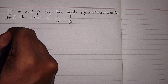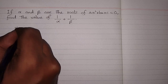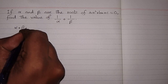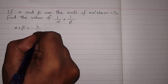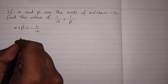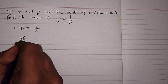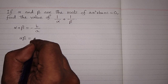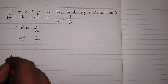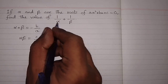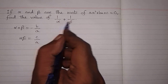If alpha and beta are the roots of the equation, the sum of the roots alpha plus beta is equal to minus b upon a, and the product of roots alpha beta equals c upon a.